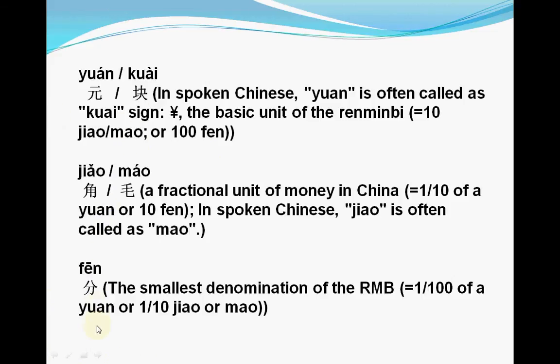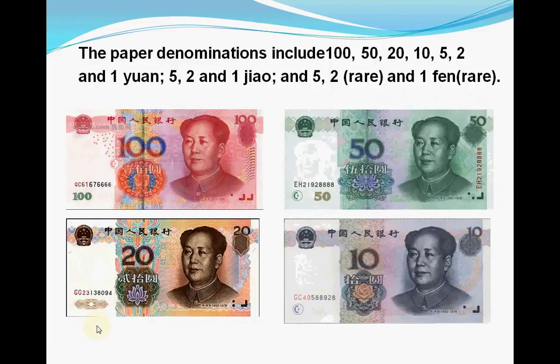Renminbi is issued in both notes and coins. The largest denomination of the Renminbi is the 100 yuan note. The smallest is the one fen coin.